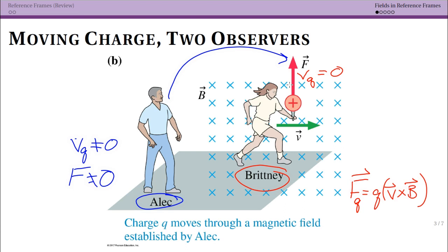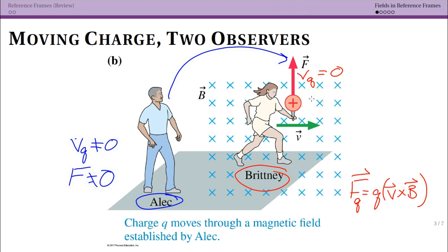It's easy to see why you'd get a force upward from Alec's point of view. However, all observers have to agree on the force — because if there's a force up, the charge would accelerate upwards, or Brittany would feel it pull upward. The laws of physics need to predict the same events: either a spring stretches or it doesn't. So we need to give Alec a different explanation.